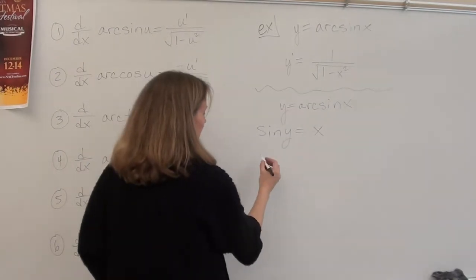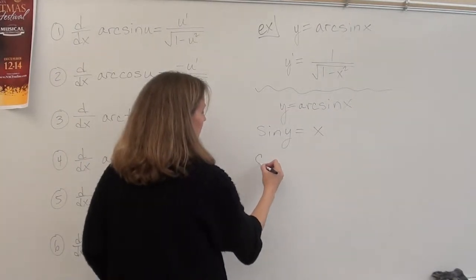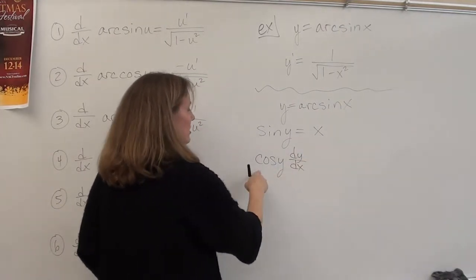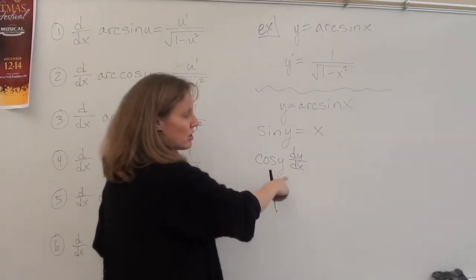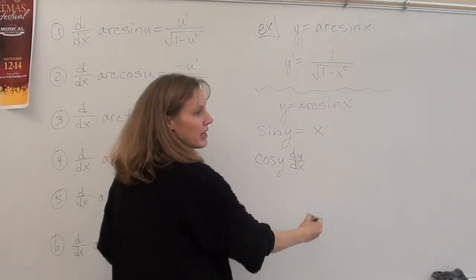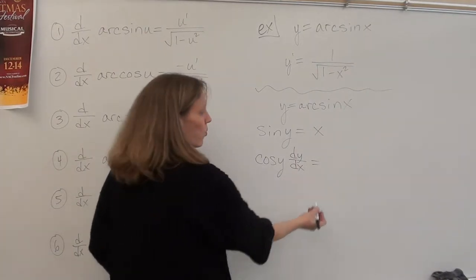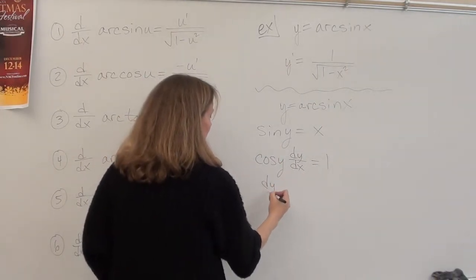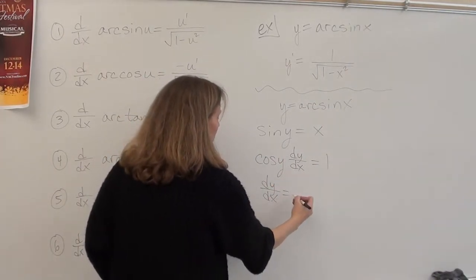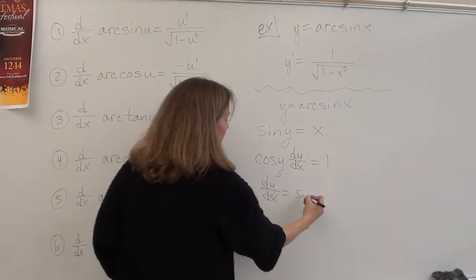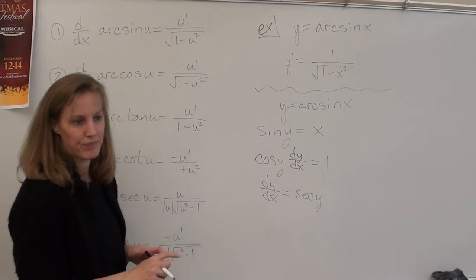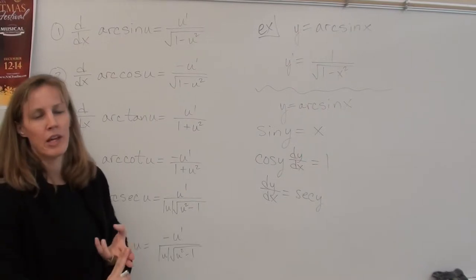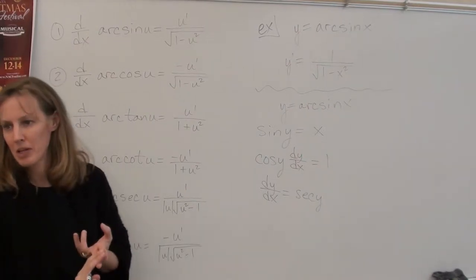Now, I've got a simple equation, sine y equals x, and I'm going to differentiate implicitly. So, what's the derivative of sine y? Cosine y dy dx, right? Not the cosine of dy dx. The argument never changes, right? So, cosine y times dy dx. What's the derivative of x? One. Now, when we solve for dy dx, we get one over cosine y, which I'm going to write as secant y. You can't leave a y in your answer, and your answer can't be written in trigonometric form. It's got to be algebraic.